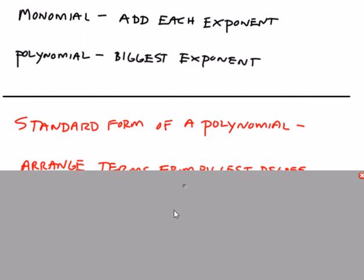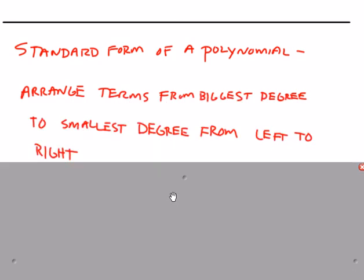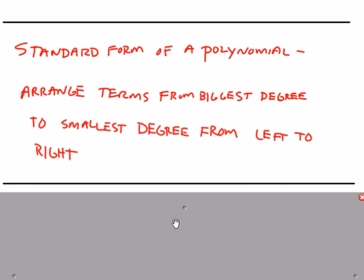Standard form of a polynomial, which in many cases you can interchange the word standard with simplest. So the simplest form of a polynomial is we're going to arrange the terms from the biggest degree to the smallest degree, from the biggest exponent to the smallest exponent going from left to right.